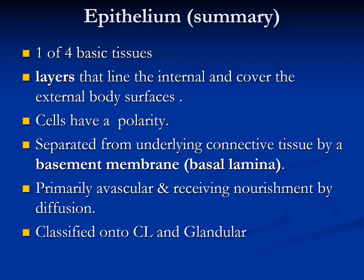So far we've talked about the epithelium. Epithelium is one of the four basic tissues and could be covering or lining an organ. Cells have polarity — they have a top and a bottom. The cells of the epithelium are separated from the underlying connective tissue by the basement membrane. Epithelium is avascular and receives nourishment and oxygen by diffusion. Epithelium can be classified into covering and lining, and the other type is glandular — that will be the topic of our next lecture.